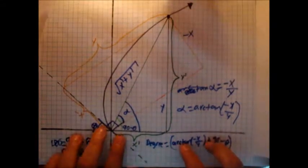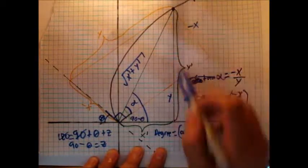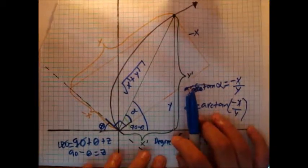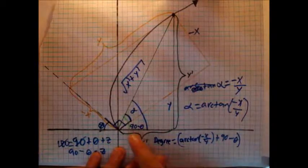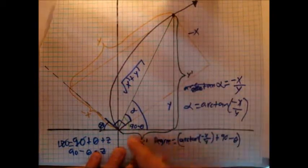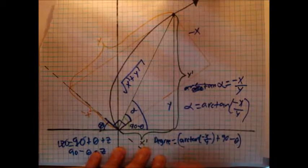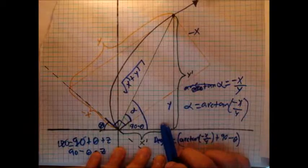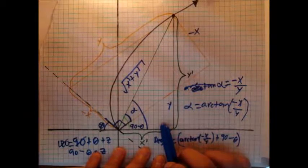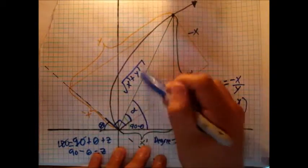Let's combine both the triangle and the rectangle. In orange we have the rectangle, and in green we have the triangle. If this is the x and this is the y, and we can find x and y, we can define the coordinate. To find x and y, we need two requirements: the length of this angle degree and the hypotenuse.